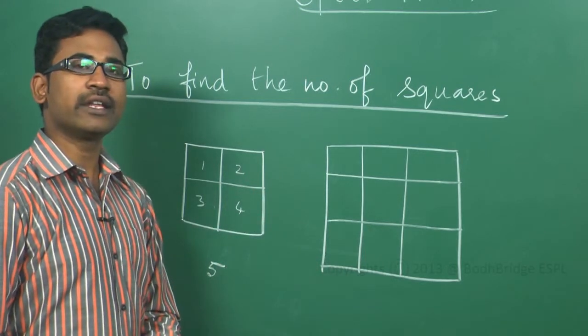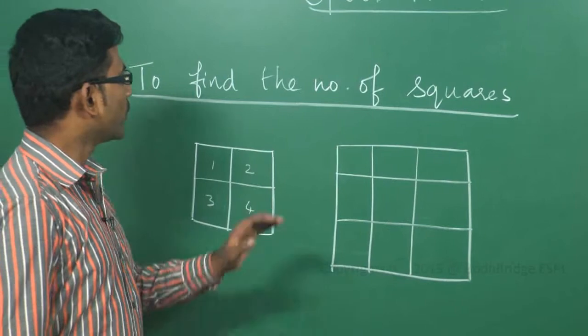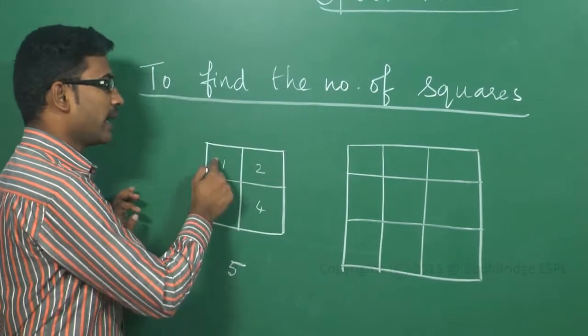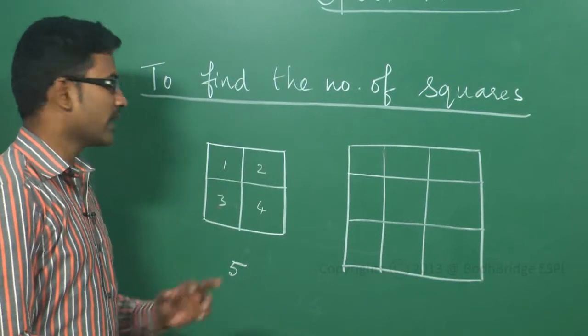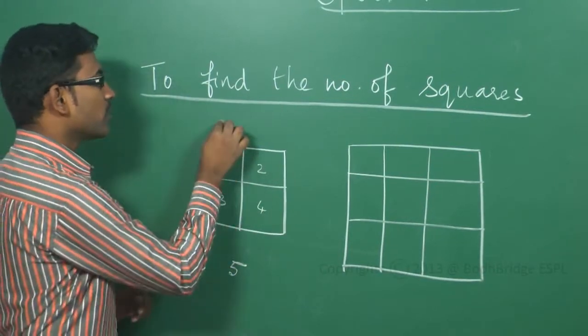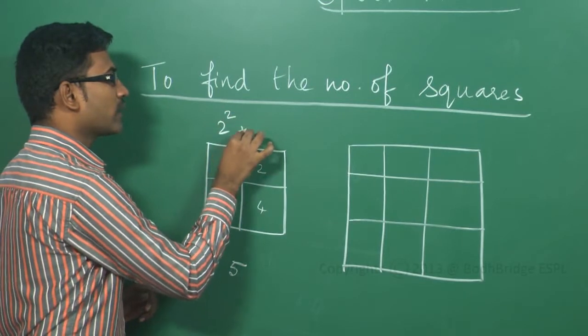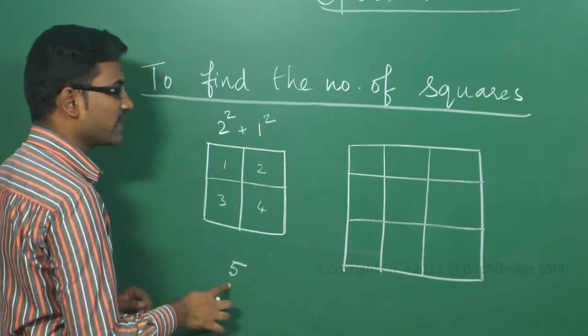We all know the area of square is a square. What is the shortcut you have to apply is, in one row, how many squares are there? You have to count. In this, there are 2 squares. So, 2 square, you have to come up to 1 square. That is giving the answer 5.